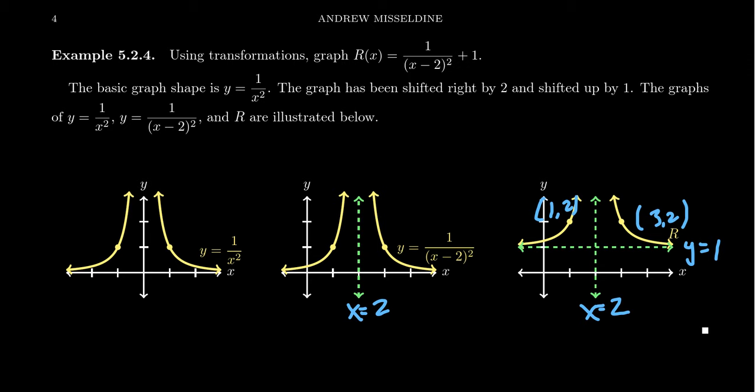Graphing monomials was still important for behavior — for example, the behavior near a root. Polynomials were approximately monomial functions when you went towards infinity or got close to an x-intercept. The same is also going to be true for rational functions: as we go to the extremes, the end behavior, or get close to an x-intercept or a vertical asymptote, our rational functions will be approximately the same as reciprocal functions. That's why we need to know these graphs.